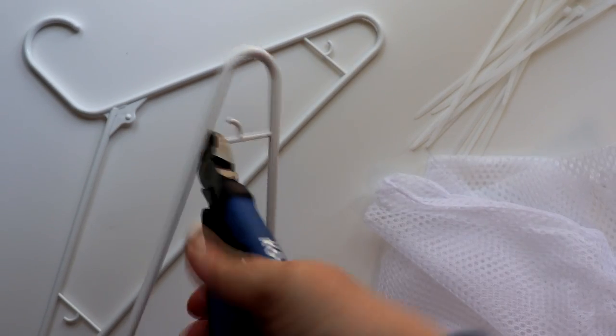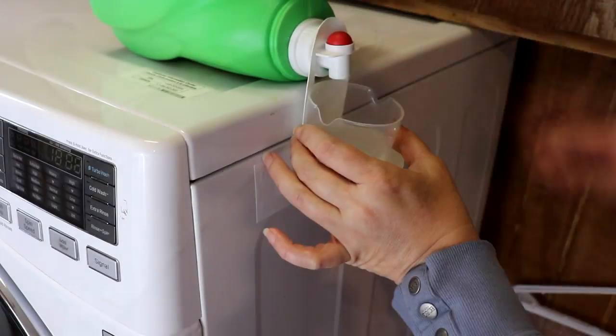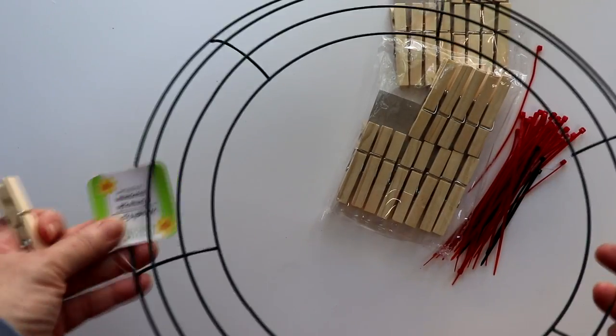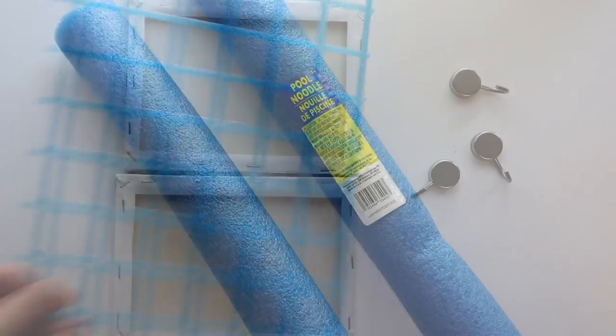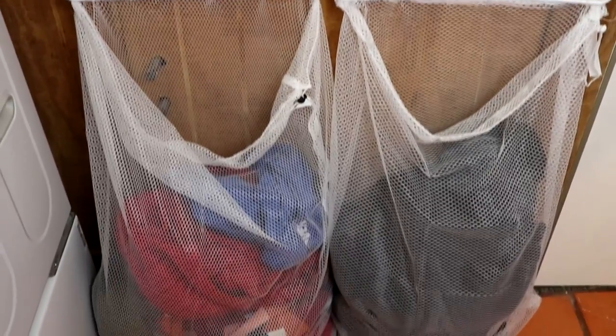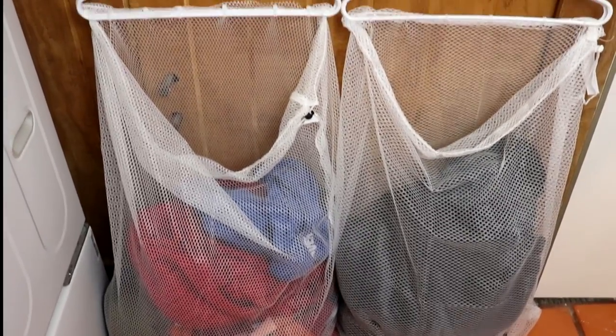As always, we'll be using everyday Dollar Tree items and altering or enhancing them in some way to create actual hacks by combining them with other items, turning them sideways, upside down, or using them in a completely different capacity than their intended use to find creative and inexpensive ways to get organized and make life easier.